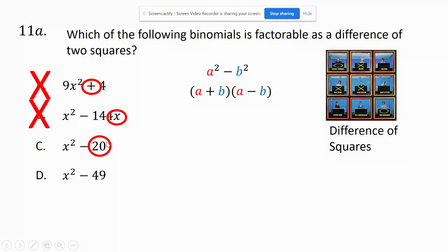I can't square root 20 evenly and get a number. I get an irrational, like 2√5, so I can't do that one.